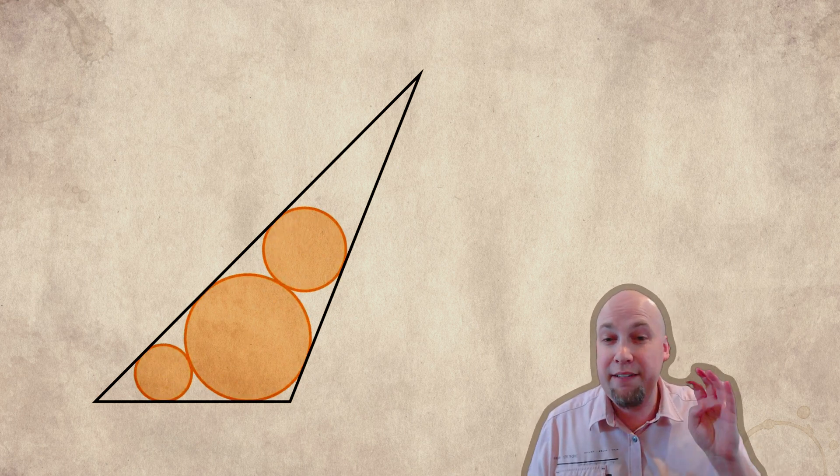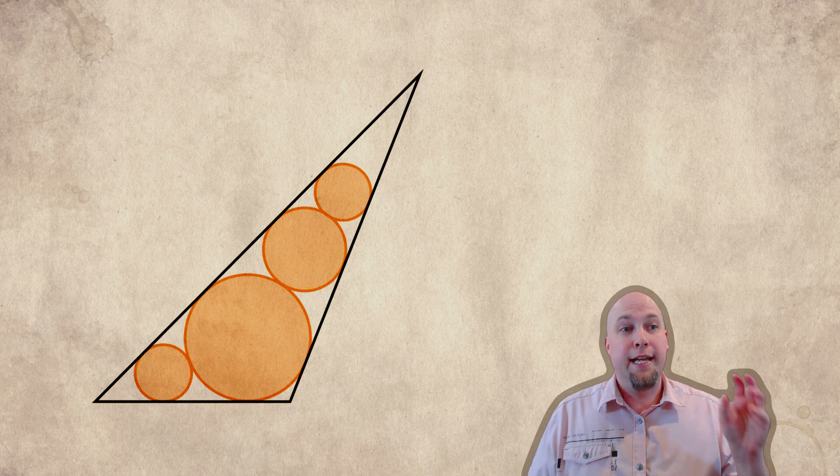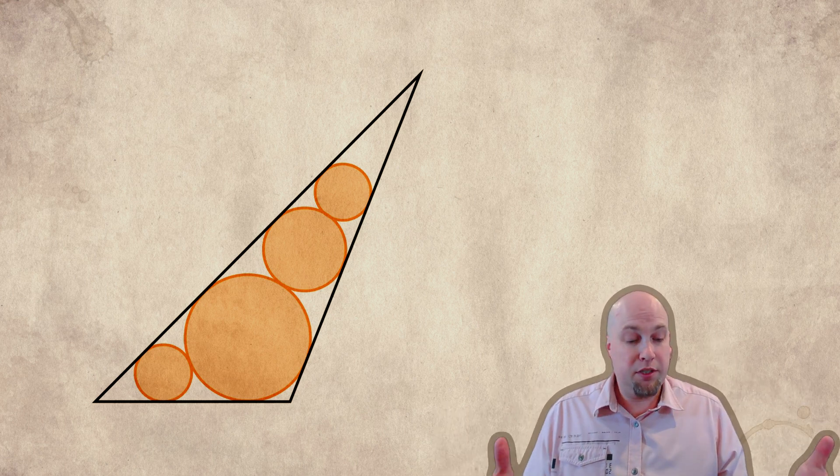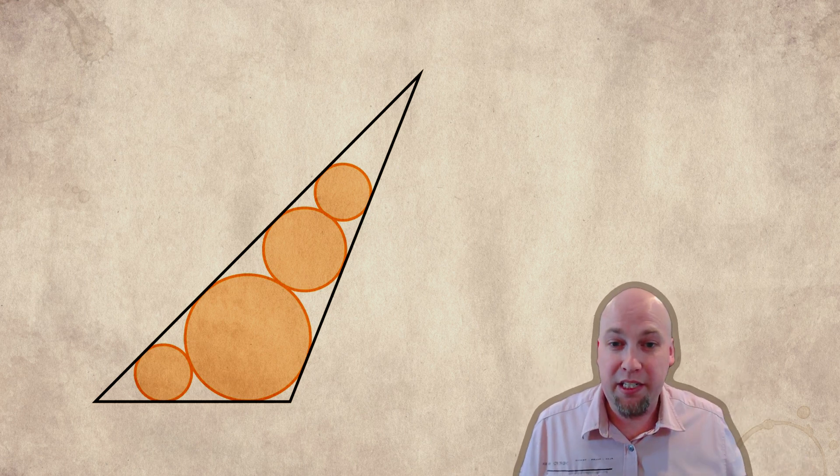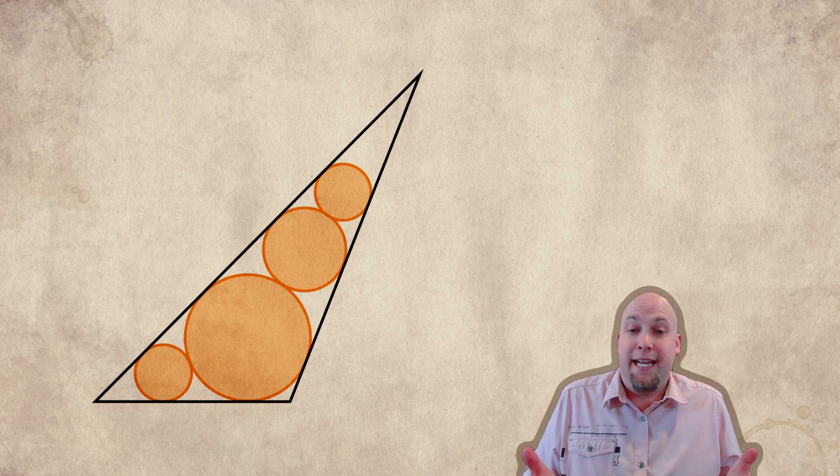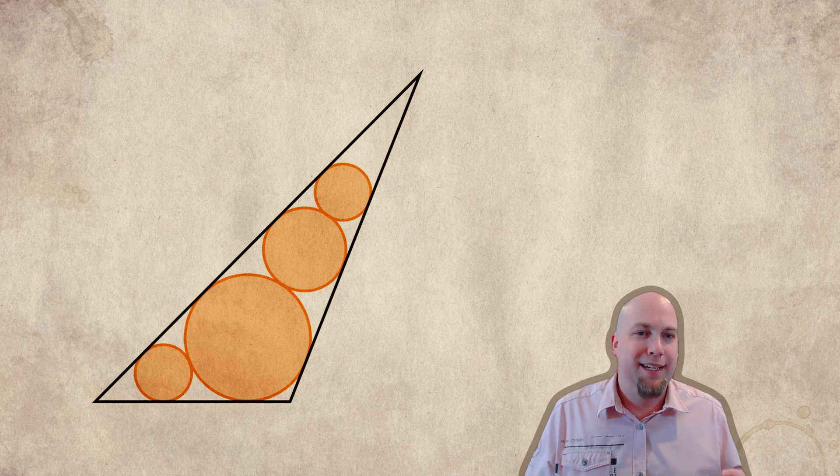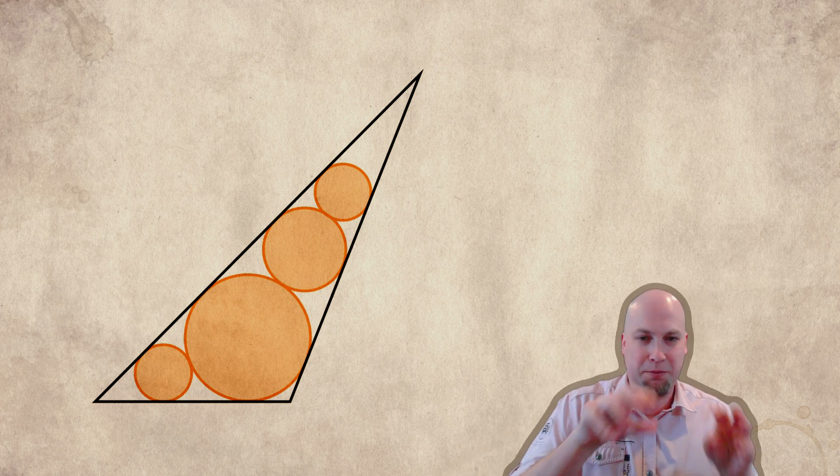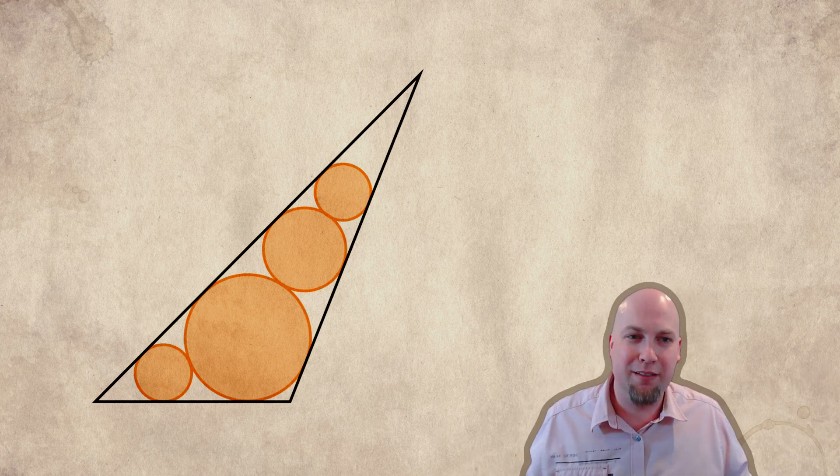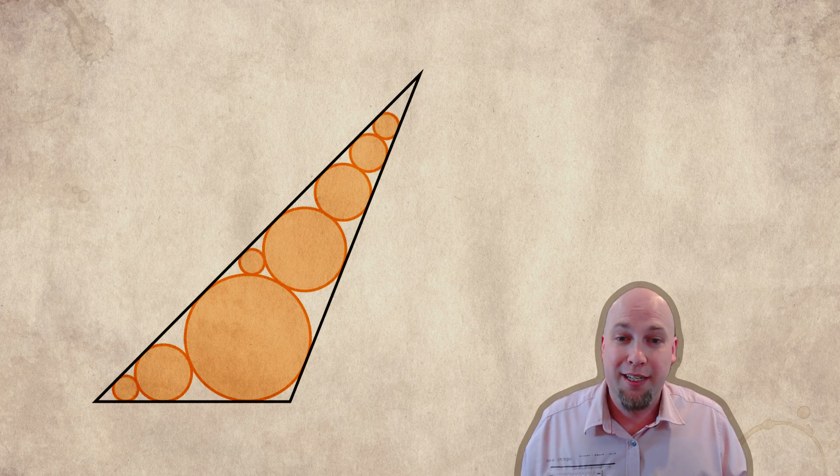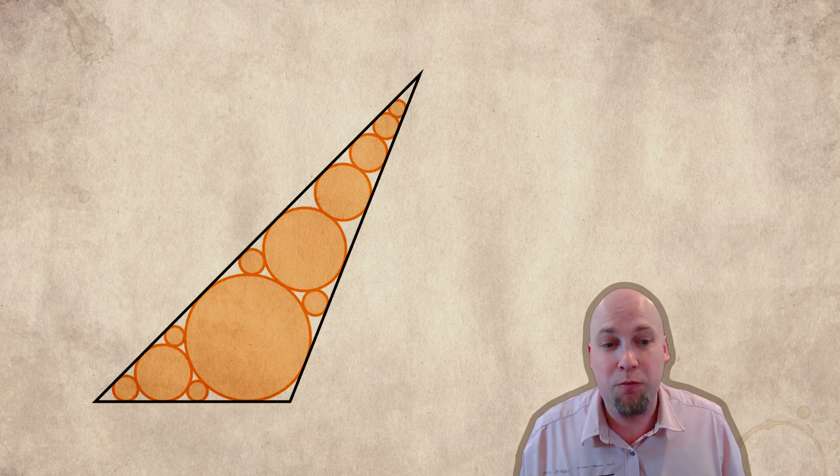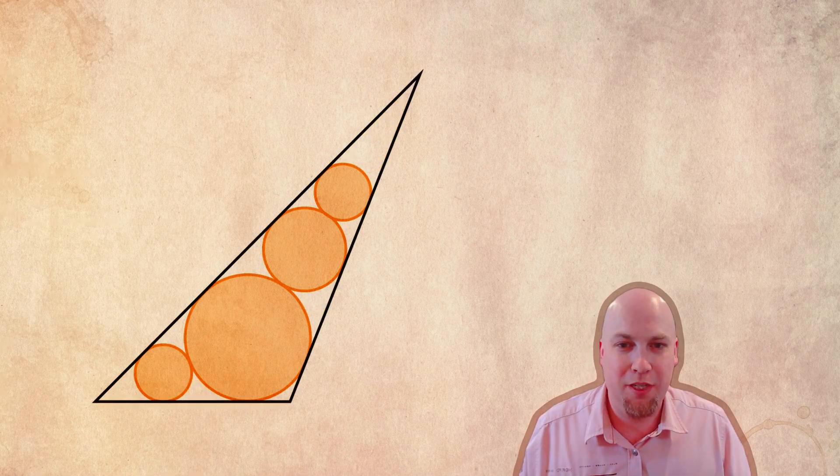But the weird thing is we don't know whether or not this always gives you the optimal configuration when there are four or more circles. Even for just four circles, if you have the question of I want to put four circles inside this triangle and I want them to cover as much area as possible, what's the best way to do it? Unfortunately, the answer right now is we don't know. We think that the best way to do this is just to place them greedily, first circle as big as possible, then second as big as possible, and so on down the line. And we think that this is optimal no matter how many circles you have, but we actually don't even know this for sure, even with just four circles inside a triangle.